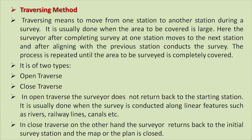Then we have the traversing method. Traversing means moving from one station to another during a survey, usually done when the area to be covered is large. The surveyor, after completing survey at one station, moves to the next station, aligns with the previous station, and conducts the survey. This process is repeated until the area is completely covered. Traversing is of two types: open traverse and closed traverse. In open traverse, the surveyor does not return to the starting station — it is usually done for linear features such as rivers, rail lines, canals, etc. In closed traverse, the surveyor returns to the initial survey station and the map or plan is closed.